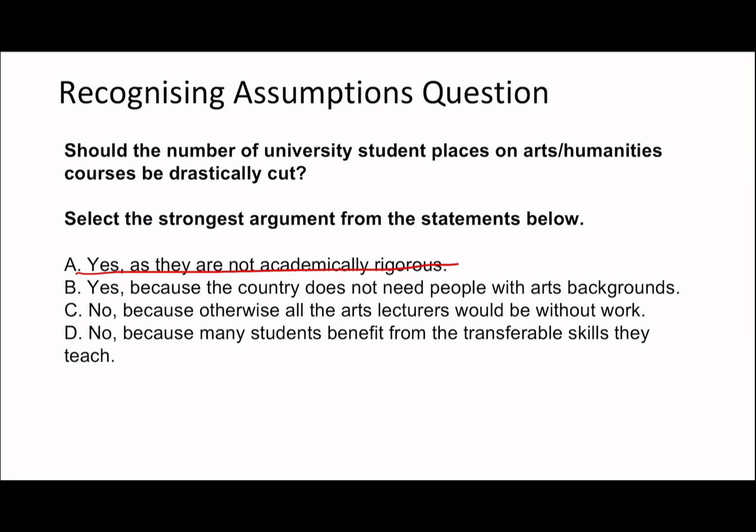Option B says the country does not need people with arts backgrounds. This is a generic statement with no backup — it offers no reason for why they might not need people. Also, if the argument is that places should be 'drastically cut,' there would still be some people doing arts. If the country truly didn't need arts graduates, you'd want to completely get rid of it rather than just drastically cut it, which doesn't make sense.